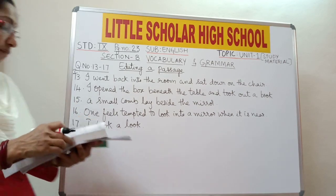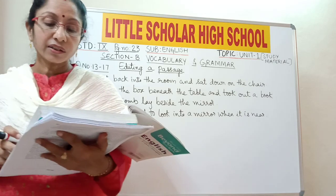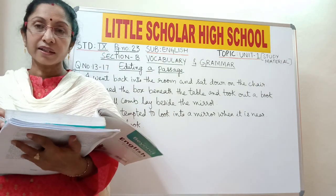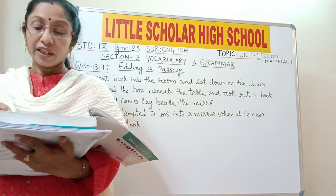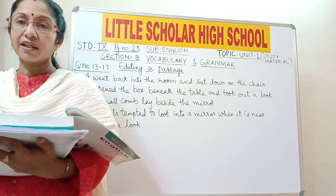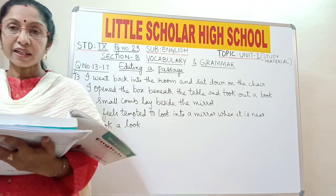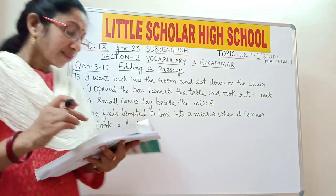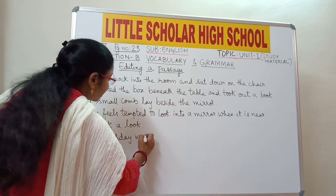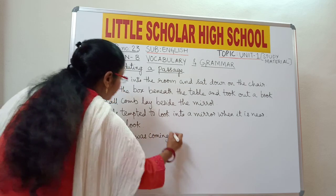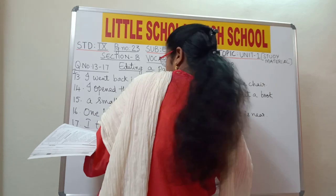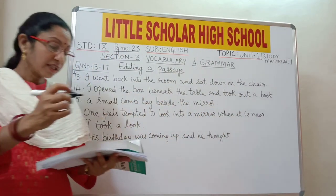Now second passage, again question number 13: 'His birthday was coming on and he thought this was a good time to tell his mother what he wanted.' The word 'on' is a preposition and it is the wrong usage. It should be replaced with 'up' — 'his birthday was coming up,' meaning his birthday was approaching. So write: 'His birthday was coming up and he thought this was a good time to tell his mother.'